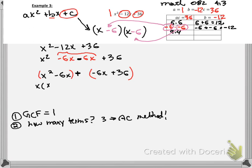So I'm going to factor out an x over here, and then I'm going to factor out a negative 6 over here. And we're left with x minus 6 times x minus 6. And that's it. Alright, let's do one more problem.